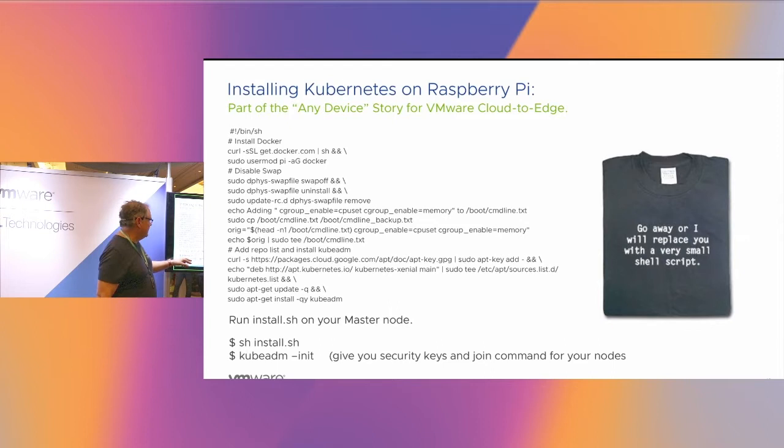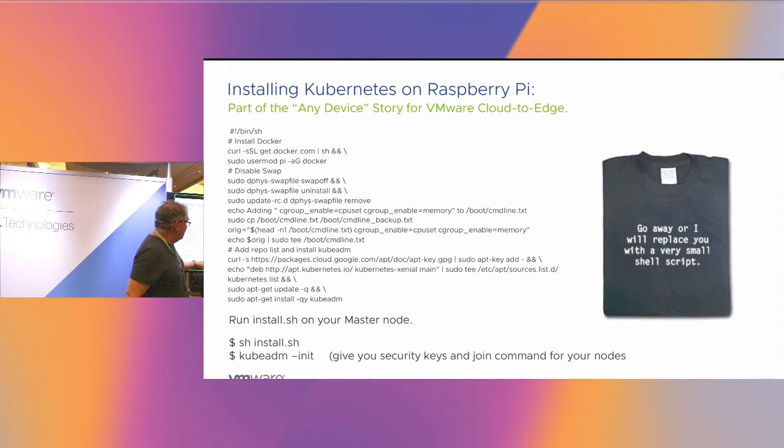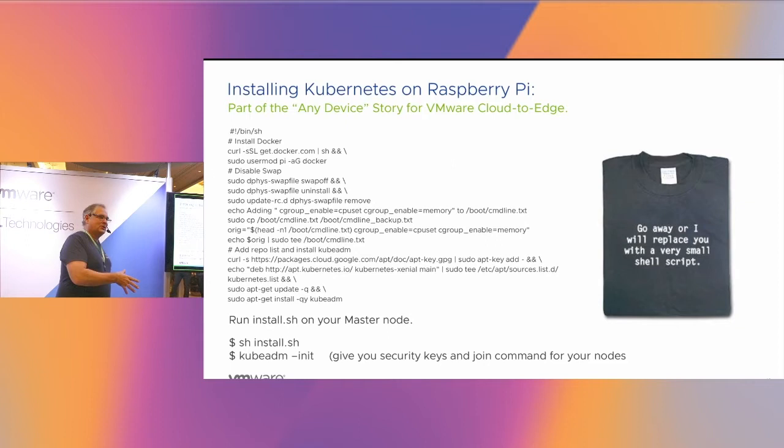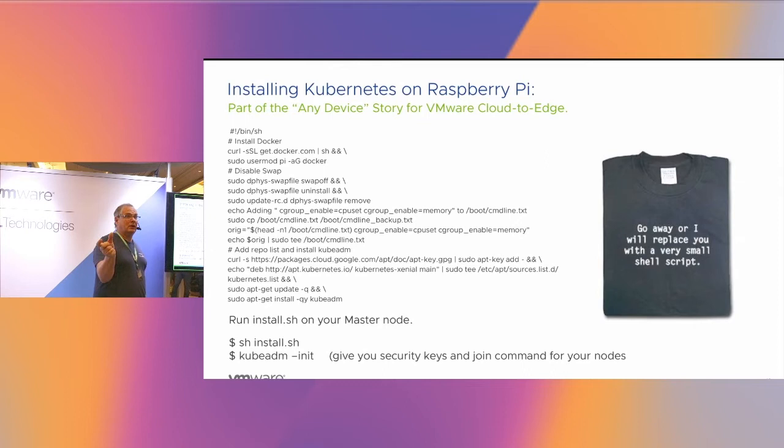I run kubeadm init. At the end, after about six or seven minutes, it will give you a success message and a join command with the security key you need to run on the worker nodes. The security key times out after 24 hours. So if you set up your master node on Friday and try to join your nodes on Sunday, they won't join. There's a kubeadm command that will get you a new key to initialize your worker nodes.